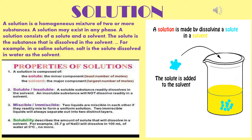Solubility describes the amount of solute that will dissolve in a solvent. For example, 35.7 grams of sodium chloride, or table salt, will dissolve in 100 milliliters of water at 0 degrees Celsius — no more. A solution is made by dissolving a solute in a solvent. A GIF has been shown here: when the solute is added to the solvent, it becomes a solution.